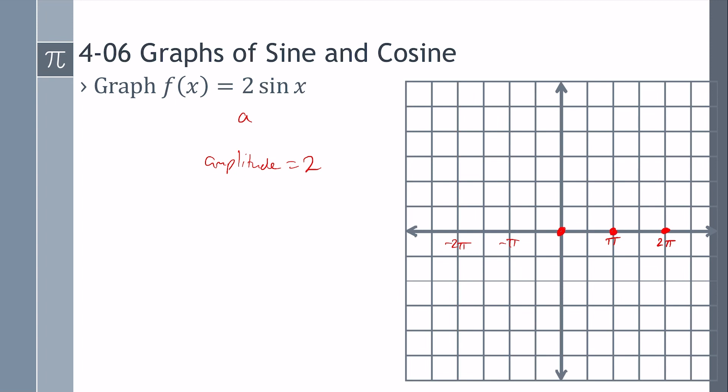And then we need some heights. If I call this one, two, three, negative one, negative two, negative three, the amplitude is two, so we'll go up to two instead of one. We'll go down to negative two.